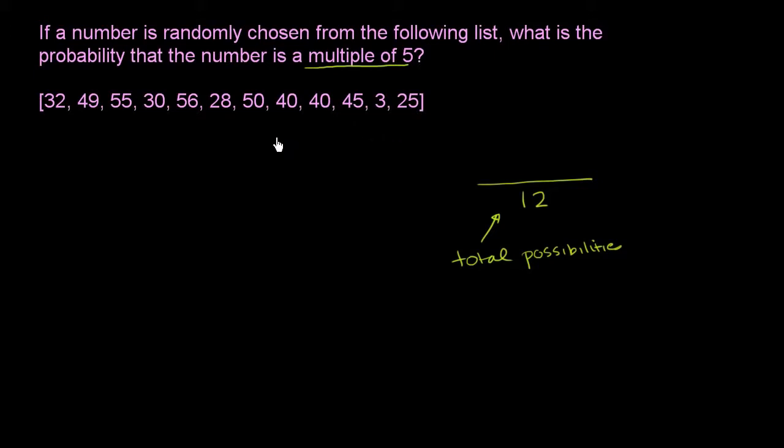Now, which of these 12 are a multiple of 5? So let me do this in a different color. So let me pick out the multiples of 5. 32 is not a multiple of 5. 49 is not a multiple of 5. 55 is a multiple of 5. Really, we're just looking for the numbers that, in the ones place, either have a 5 or a 0.